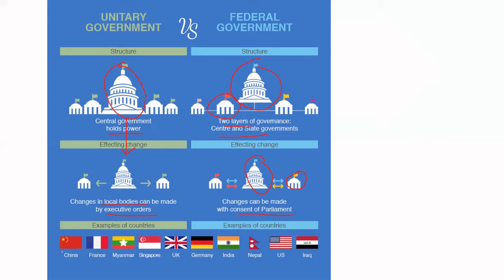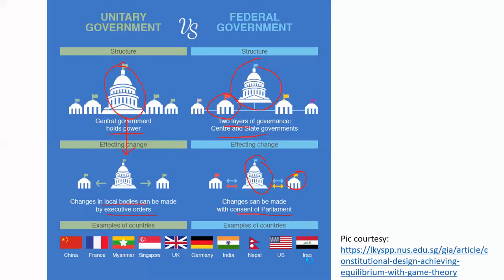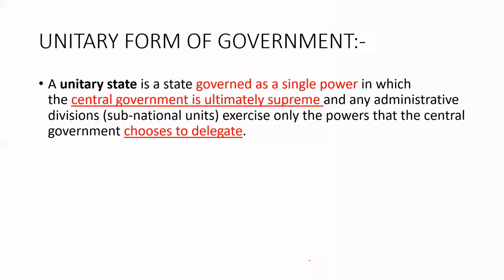There are examples of this. Examples of unitary form of government include China, France, Myanmar, Singapore, and the UK. Whereas, examples of the federal form of government include Germany, India, Nepal, US, Iraq, etc.